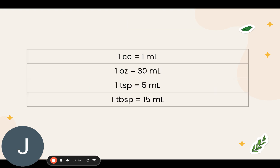Some important conversions to remember: one cc is the same as one milliliter; one ounce is equal to 30 milliliters; one teaspoon is equal to five milliliters; and one tablespoon is equal to 15 milliliters.